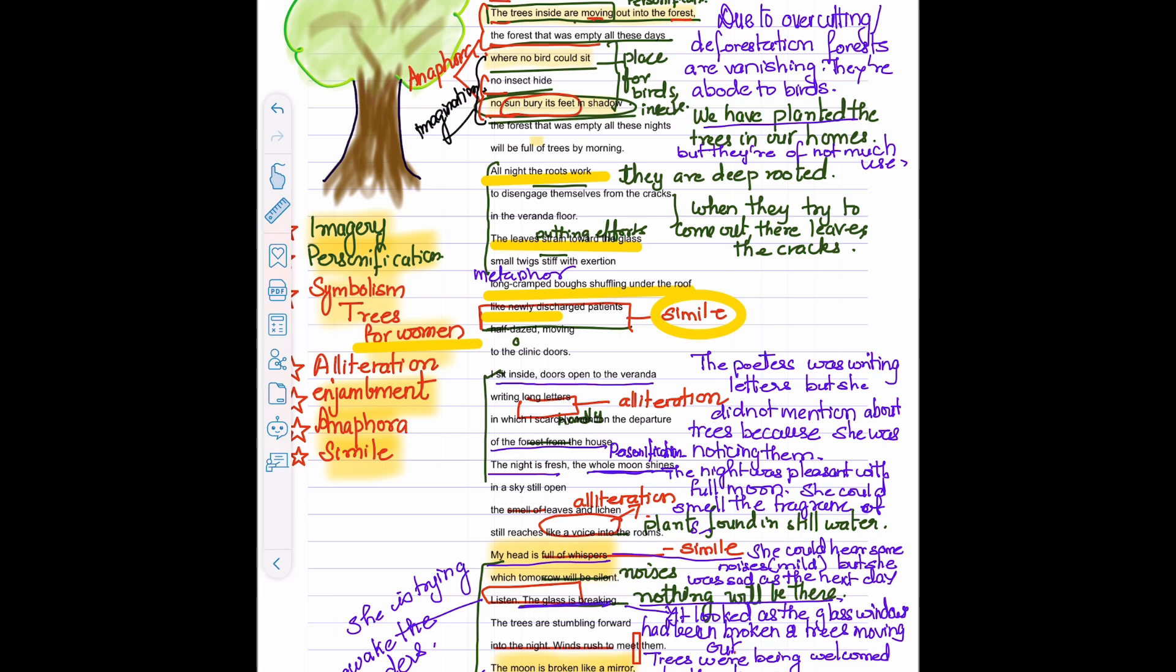Then we have symbolism. The trees as I said symbolizes the women. Then enjambment, because many of the lines like the second, third, fourth, fifth line there are no punctuation marks. Anaphora, the trees inside, no insect hide, no sun bury, it's anaphora because the word no is repeated. Then simile, like a voice into the rooms, broken like a mirror, we have simile. And my head is full of whispers can be said as synecdoche.